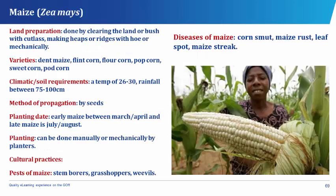Talking about maize, which has its botanical name as Zea mays. Zea mays, also known as corn, is a member of the grass family, the Gramineae. It is a cereal crop which produces grains that can be used as food by human beings as well as livestock. The seed or fruit of maize is a caryopsis.